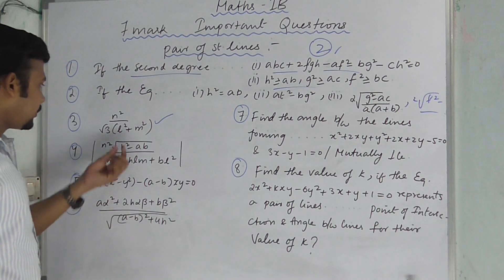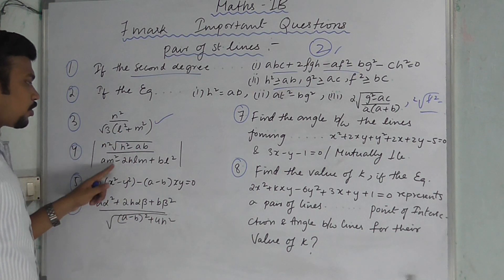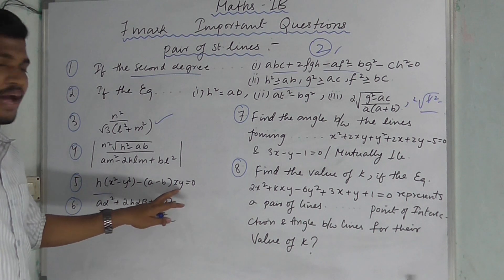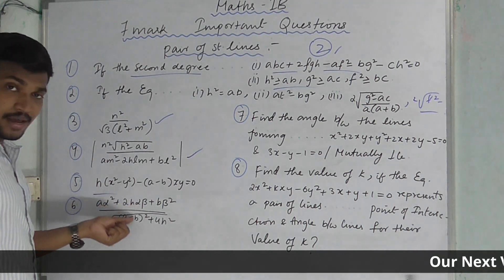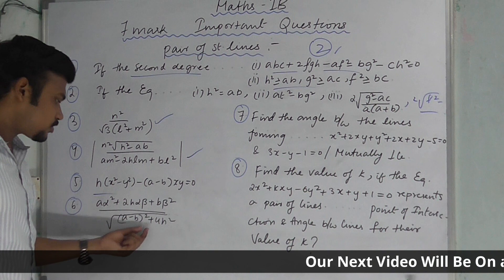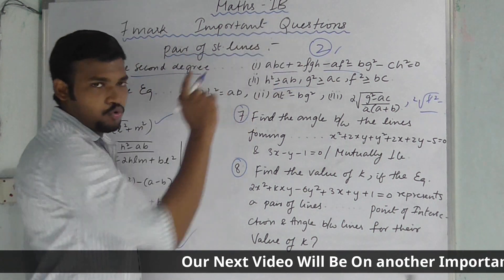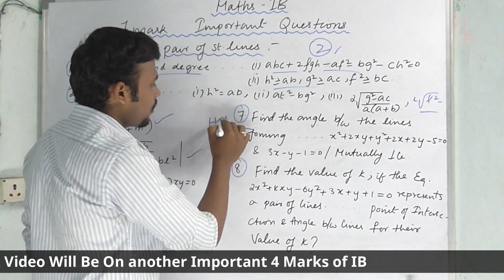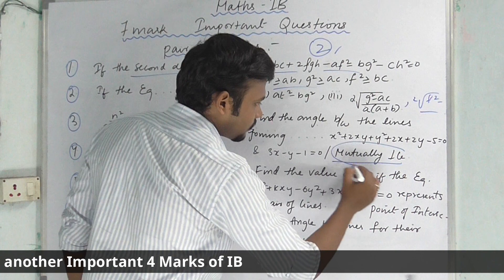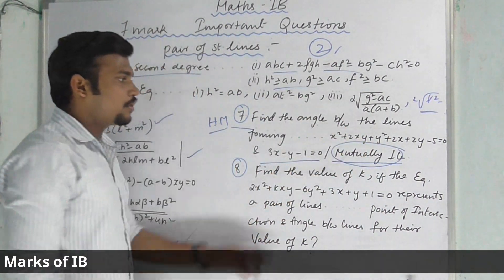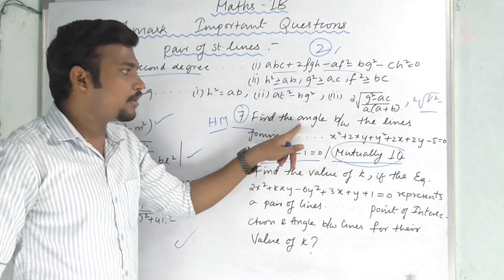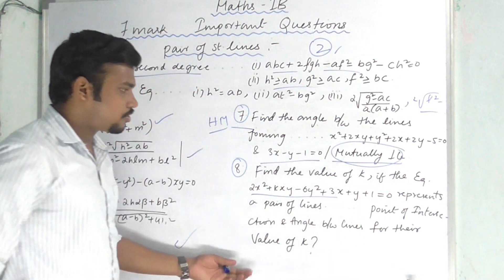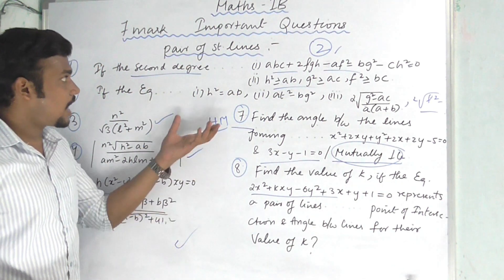Another formula: n² / √3 times (l² + m²). Also, √(h² − ab) / (am² − 2hlm + bl²), and H(x² − y²) − (a − b)xy = 0. The expression (a − b)² + 4h² also appears. These lead to: find the angle between the lines joining a point, and that is the homogenizing model. This is the mutually perpendicular condition. Find the value of k if the equation represents a pair of straight lines. These are the important questions from the chapter pair of straight lines.